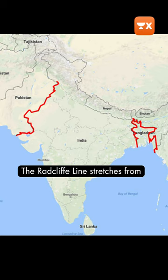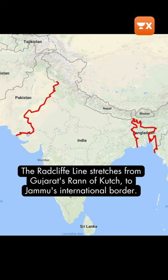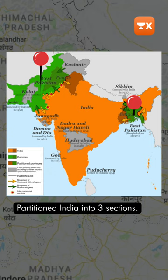The Radcliffe Line stretches from Gujarat's Rann of Kutch to Jammu's international border, separating India and Pakistan. Radcliffe partitioned India into three sections: West Pakistan, East Pakistan, and India.